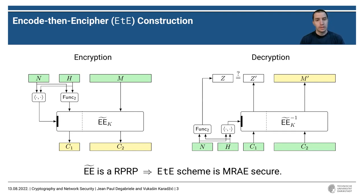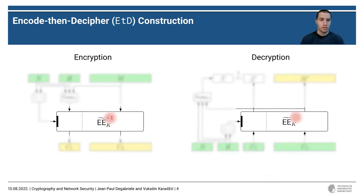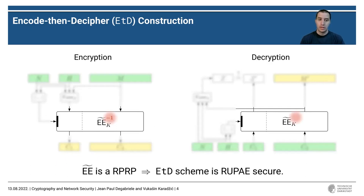Since RPRP is an asymmetric notion, we also explore the option of encryption using the deciphering algorithm and decryption using the enciphering algorithm. This gives us the encode-and-decipher construction. It turns out that if the underlying tweakable cipher is an RPRP, the ETE scheme will be secure against release of unverified plaintexts.